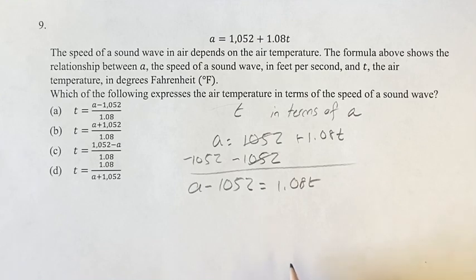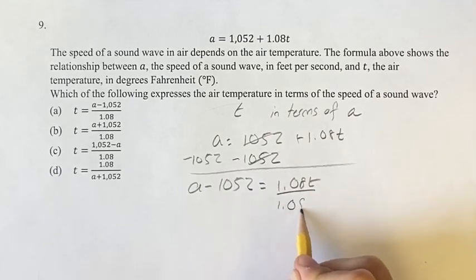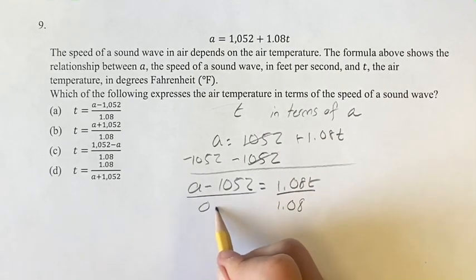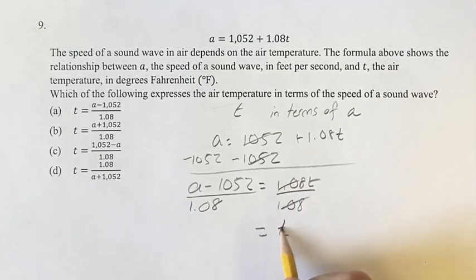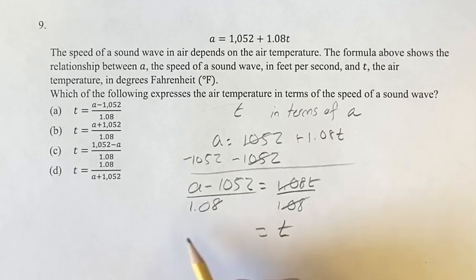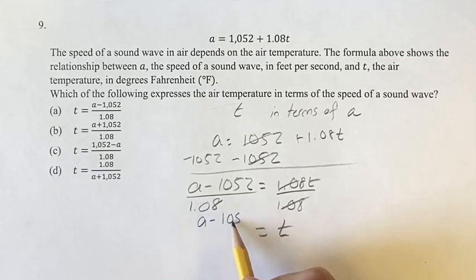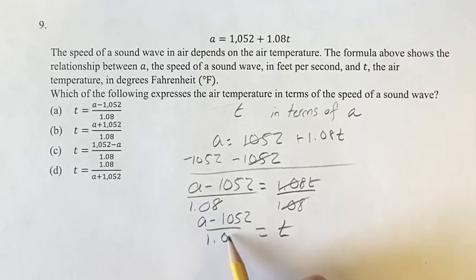And again, we want to get T on its own, so we divide this by 1.08, which means, of course, we have to do it to the other side, which will give us 1T, or just T on this side, and A minus 1052 over 1.08.